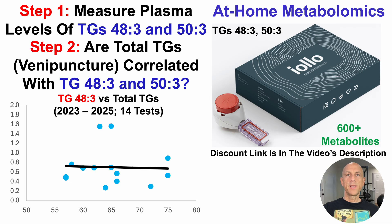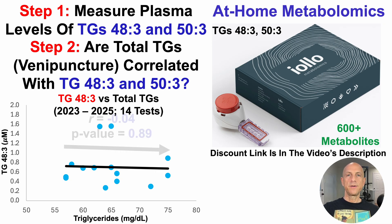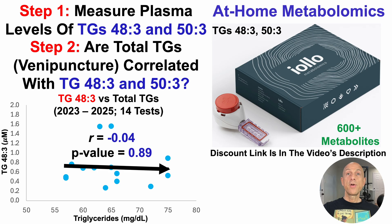Looking at TG48-3 plotted against total triglycerides across 14 tests from 2023 to 2025 — on the y-axis, plasma levels of TG48-3, and on the x-axis, triglycerides in milligrams per deciliter — they are not significantly correlated. The p-value is far from the 0.05 significance threshold at 0.89. So total triglycerides as obtained by venipuncture are not significantly correlated with plasma levels of TG48-3.